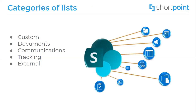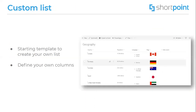Let's check the categories of lists. There are: custom list, documents, communications, tracking and external. Custom lists provide a starting template that you can build on to create a list with the exact columns you need. You can modify the columns and set the settings. It can be used, for example, to keep all information about your departments, how many employees are working there in different offices.